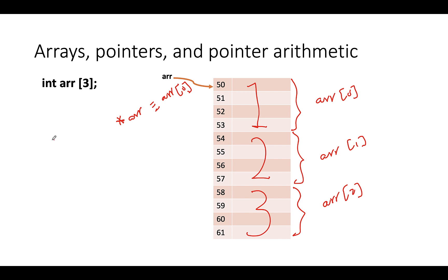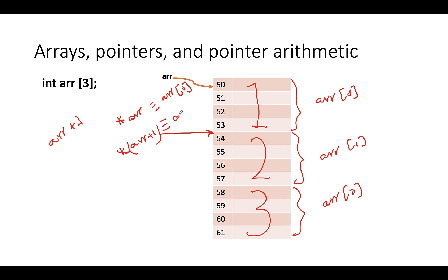In C++, if I add a value to a pointer — say I add 1 to array — that creates a pointer that points one element away from where array points. Since one element is 4 bytes, this makes a pointer that points 4 bytes forward, to the second element. So if I dereference this pointer by writing *(array + 1), making sure the addition is done first, this gives me the second element, which is the same as array[1].